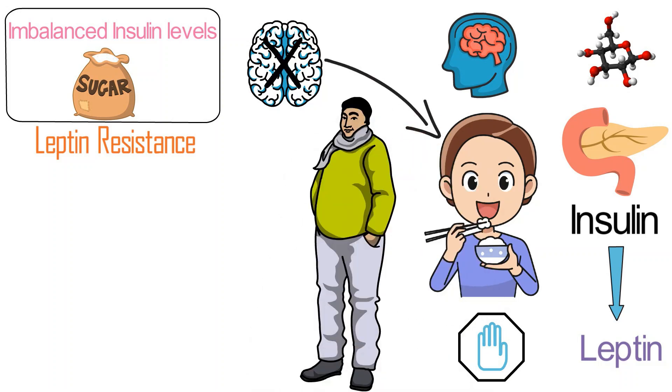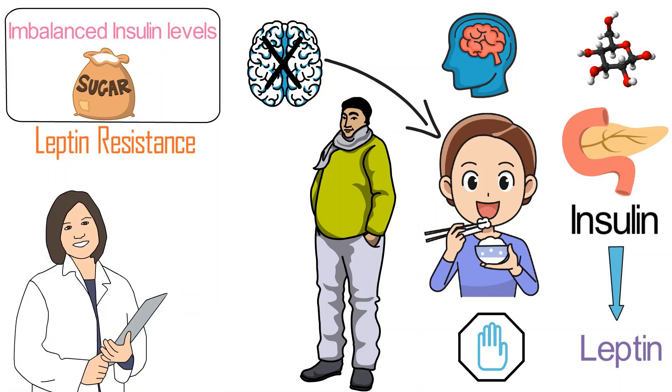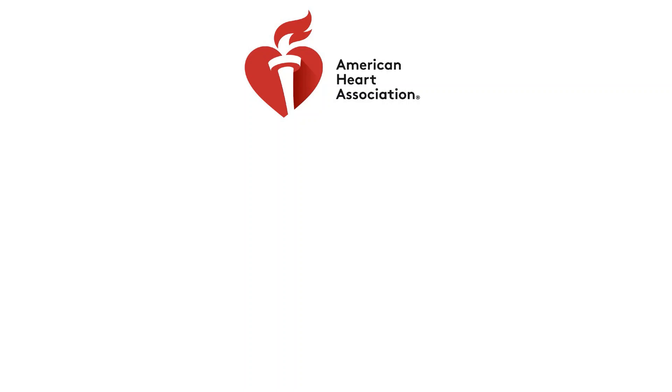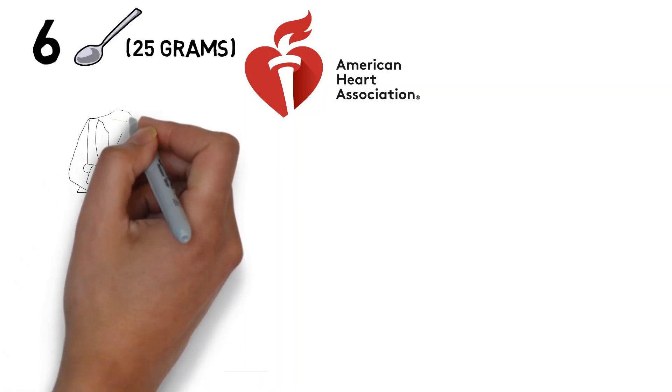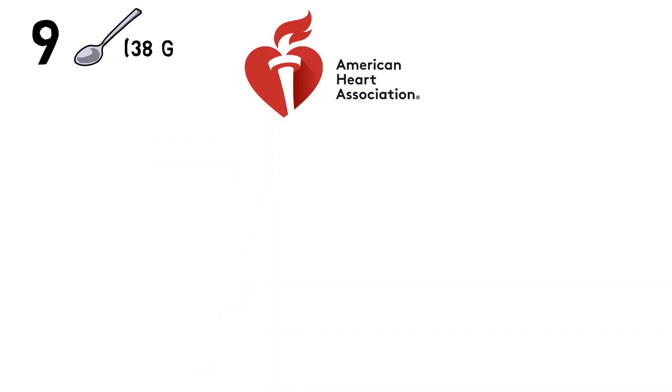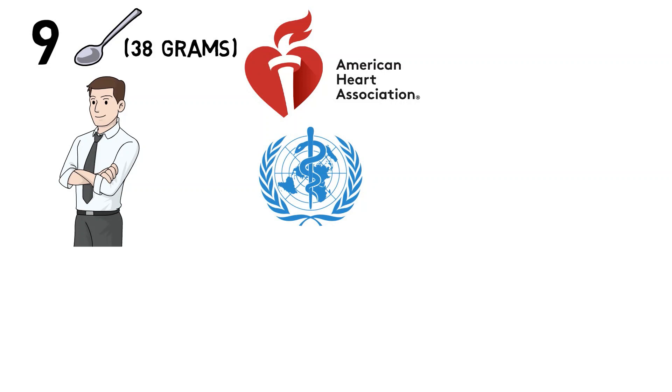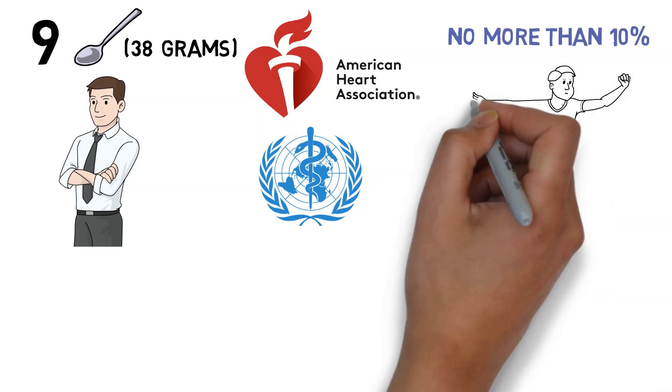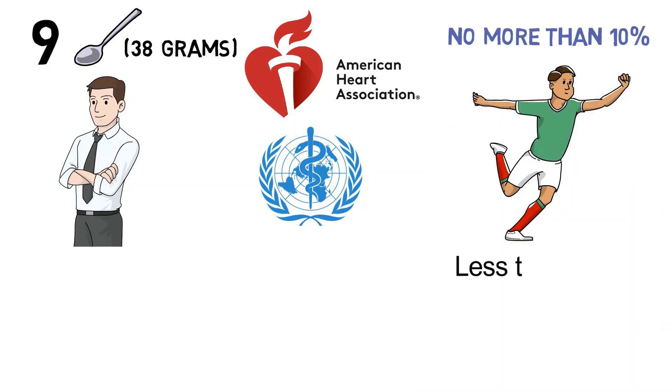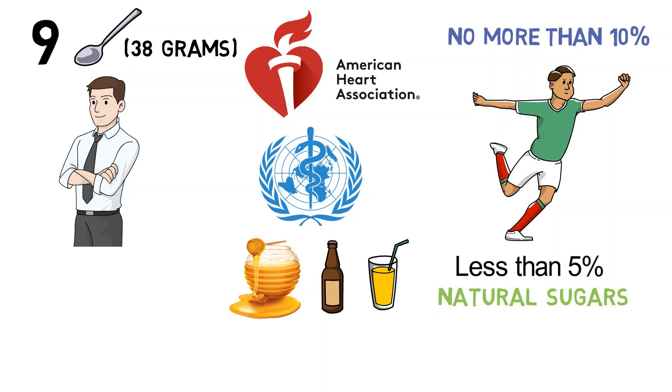To avoid these effects, expert panels worldwide have made consistent recommendations on daily sugar intake. The American Heart Association recommends no more than 6 teaspoons, or 25 grams, of added sugar per day for women and 9 teaspoons, or 38 grams, for men. That is in line with the World Health Organization's recommendation that no more than 10% of an adult's calories, and ideally less than 5%, should come from added sugar or from natural sugars in honey, syrups, and fruit juice. For a 2,000 calorie diet, 5% would be 25 grams.